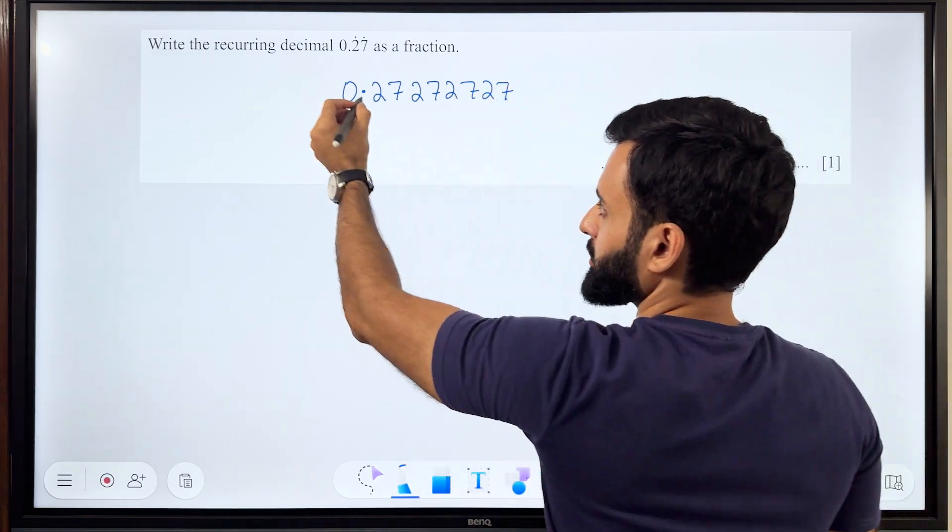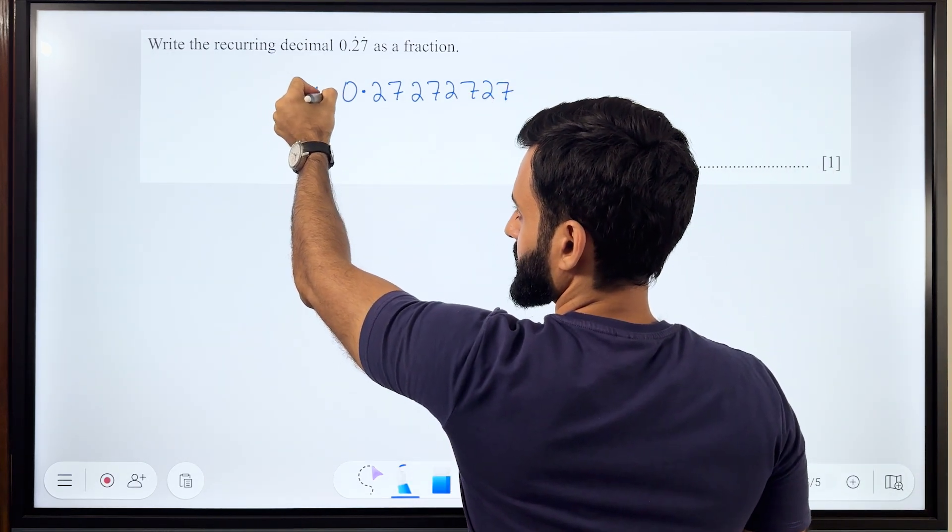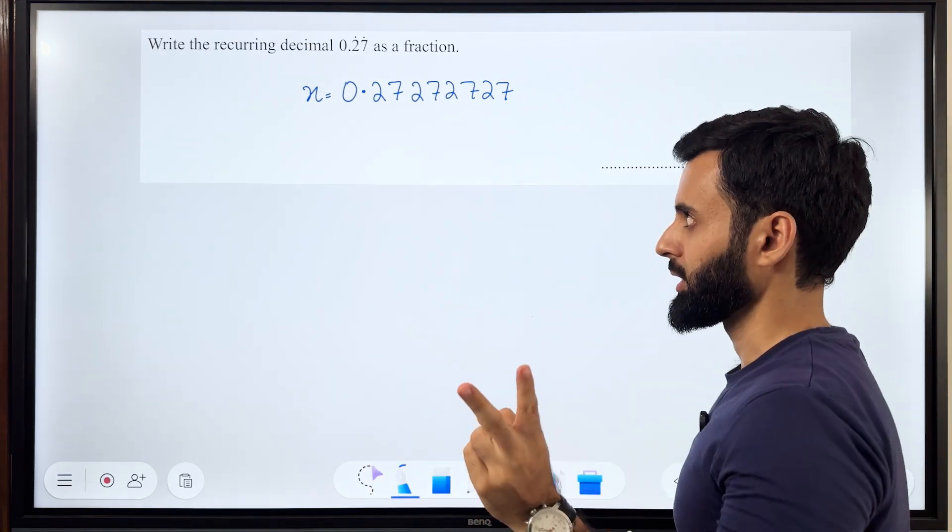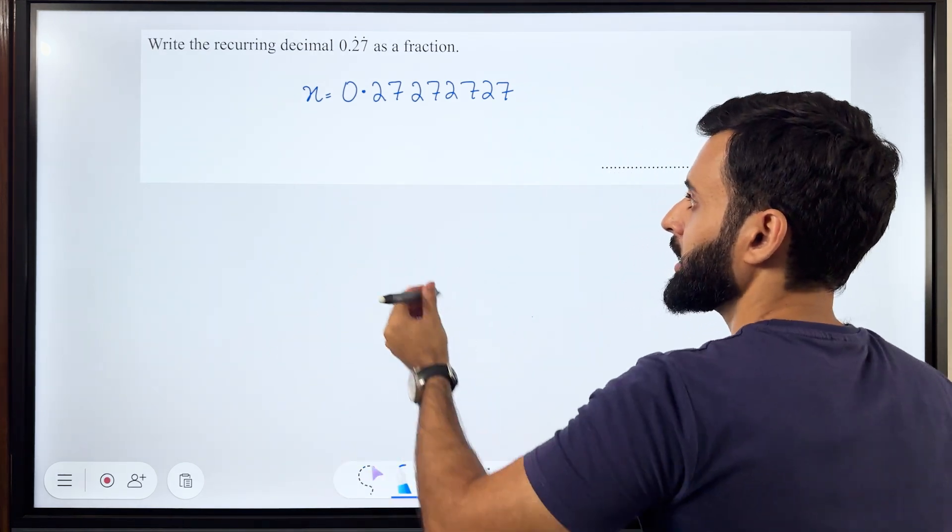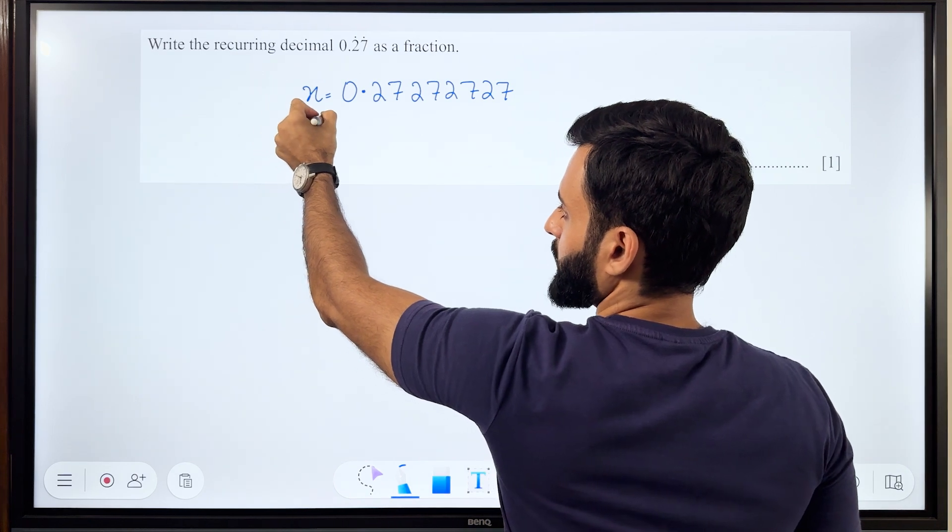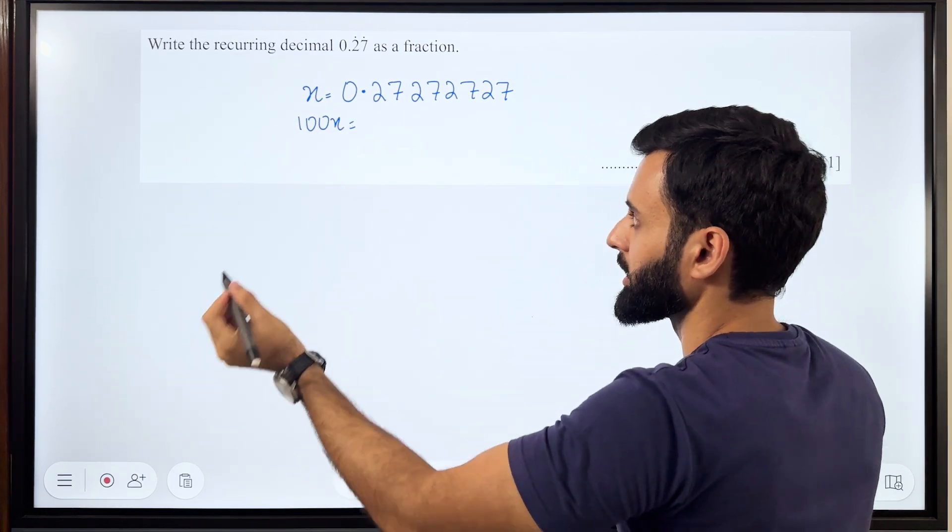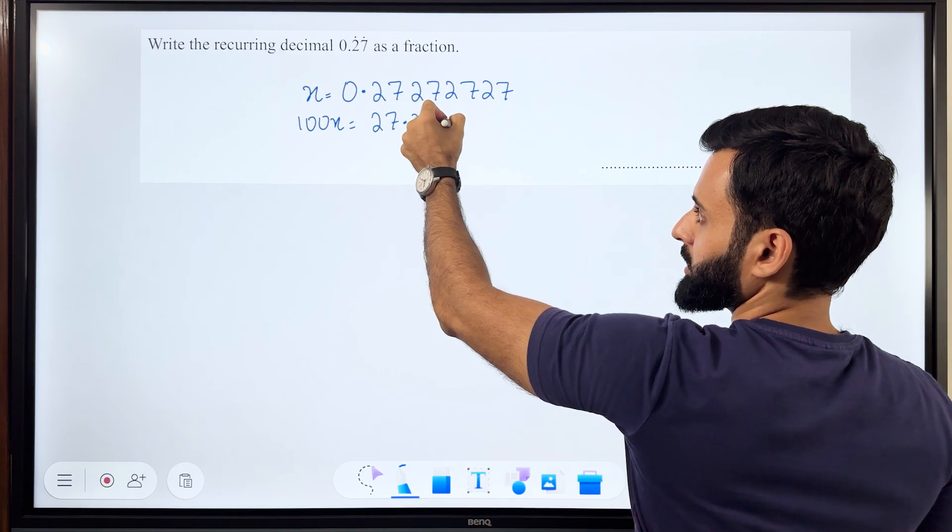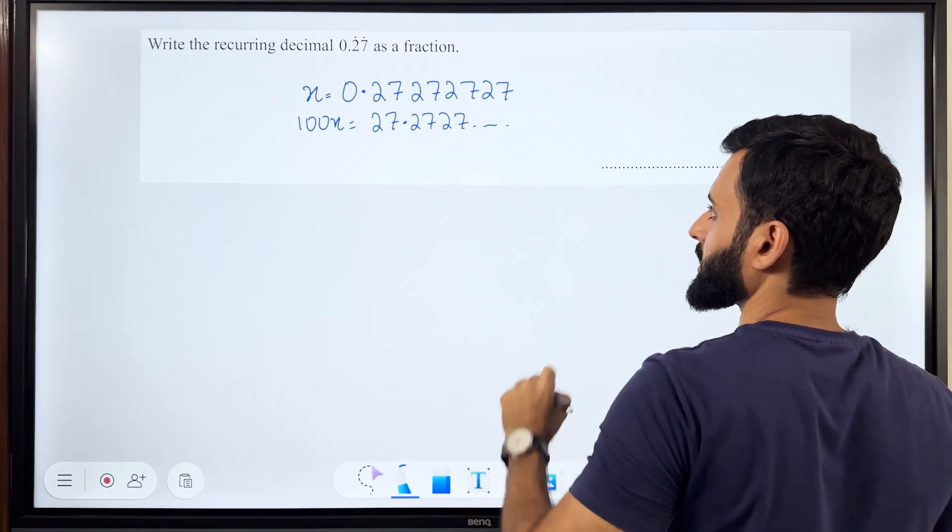Remember this pattern will continue forever. I'm going to call this x. Now since the recurring pattern is of two numbers - 2, 7, 2, 7, 2, 7 - if I multiply x by 100 which is 100x, I will get 27.2727 and then the same pattern will continue.